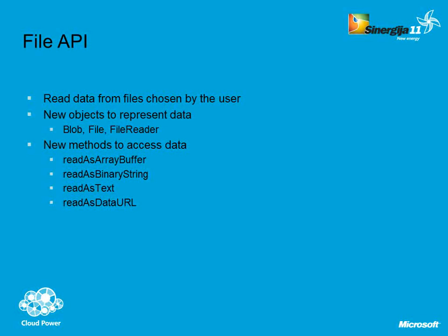Blob and File objects are used for working with files. FileReader is for reading files. There are some methods — maybe you don't understand the last one: readAsDataURL. It means it creates some kind of URL to your file on the computer, and this URL you can use as a src attribute value. So for example, if you have an image, there's a src attribute, and using readAsDataURL you can read the file and put the result as a value for that src attribute.